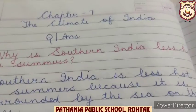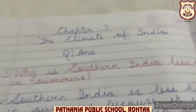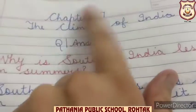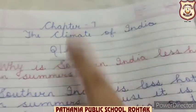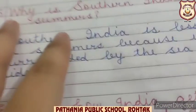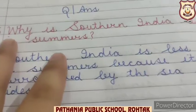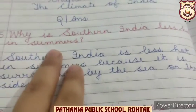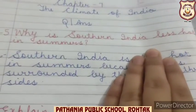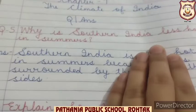Write down question number 5 in good handwriting. Question number 5: Why is Southern India less hot in summers?